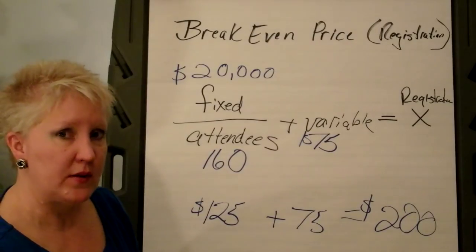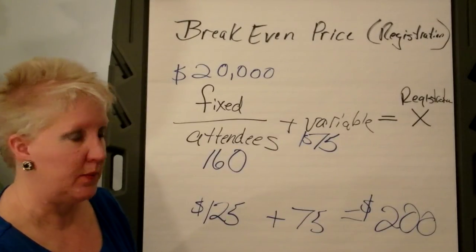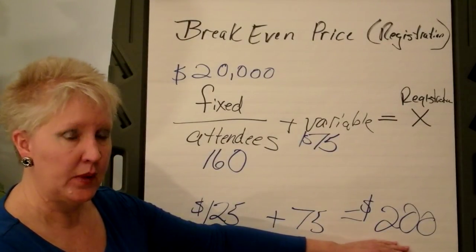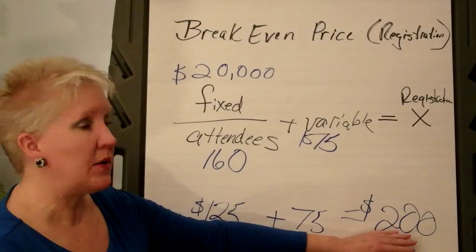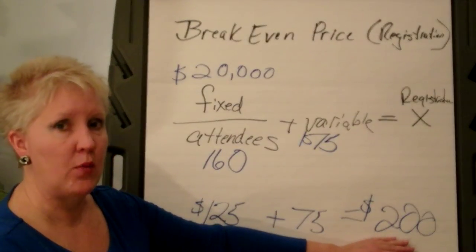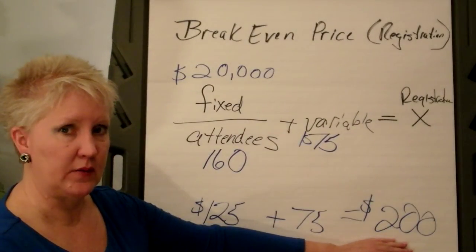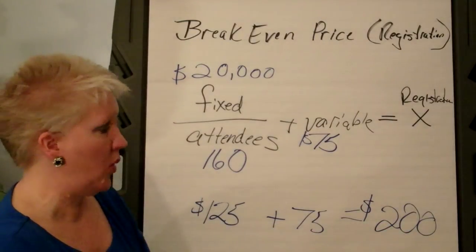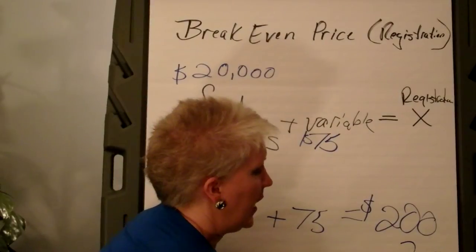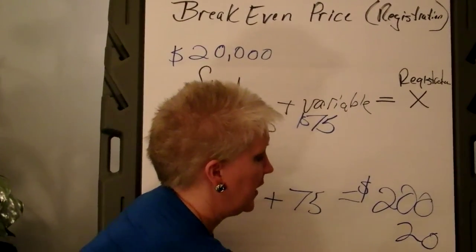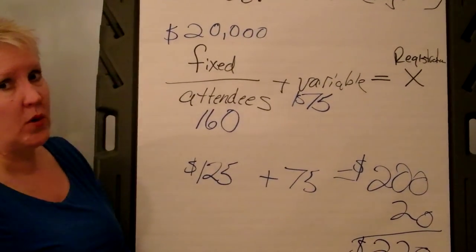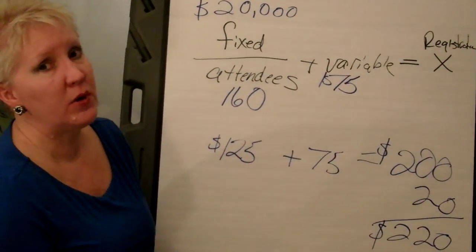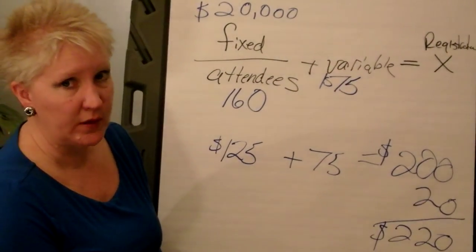The other way a profit is sometimes made is once you have your registration fee — your actual cost per person — you add a percentage on top. For example, if you want a 10% profit, you figure out 10% of $200, which is $20, and your new registration price becomes $220. Therefore, you've covered your costs and made a 10% profit on the event.